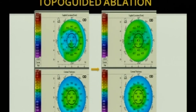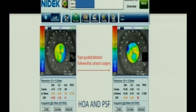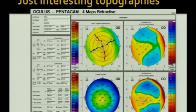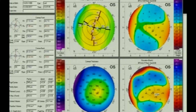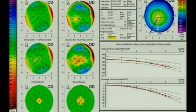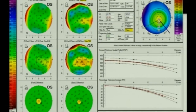Pre-ablation corneal irregularity is corrected with topo-guided treatment to give a post-ablation regular cornea, on which IOL power calculation can be based using the EK/ESCRS calculator. For example, corneal aberrations before surgery were around 0.7, which after topo-guided treatment came down to 0.17 — fairly acceptable. Even after achieving this regular surface, vision remains blurred because of the cataract; after subsequent cataract surgery the patient gets good visual quality.